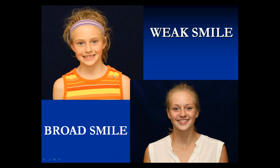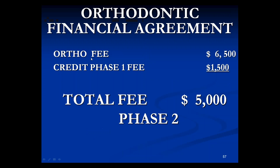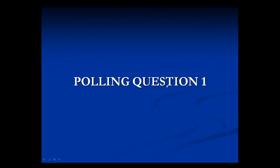She started with a weak smile — look at that beautiful smile now. In Ontario my phase two fee is about $6,500; I gave them a credit of $1,500 for phase one, so they paid $5,000 for phase two. It can be very economically favorable for you and a great deal for the patient.